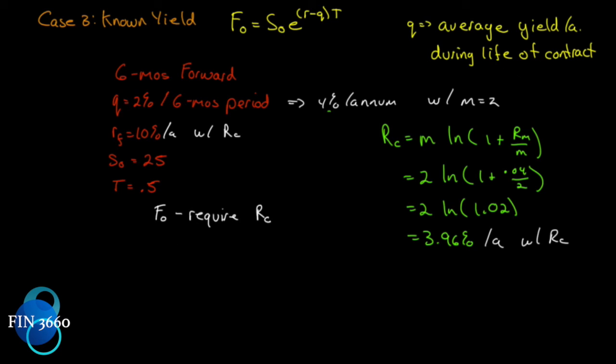It's hard to keep it all straight, isn't it? But that's a little bit tricky when we get to known yield - make sure that everything is expressed as continuously compounded. Now all we have to do really is solve for the unknowns. F₀ = S₀e^((r-q)t). Let's substitute in: S₀ is 25, e^(r is 0.10 minus q is 0.0396) and our t is 0.5.